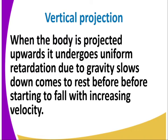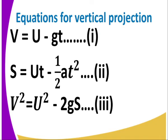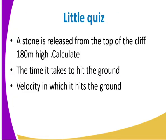For vertical projection, when a body is projected upwards it undergoes uniform retardation due to gravity, decelerating until it comes to rest before starting to fall with increasing velocity. As the body moves upwards it is attracted towards the earth by gravity, so acceleration is negative. The equations become: v = u − gt, s = ut − ½gt², and v² = u² − 2gs.